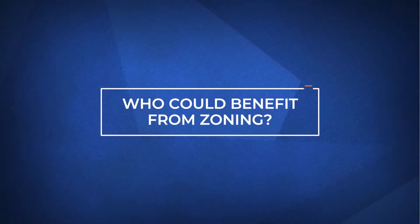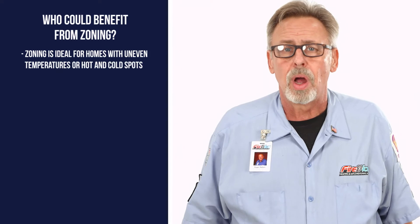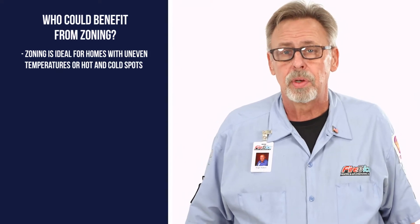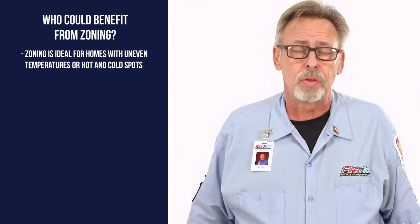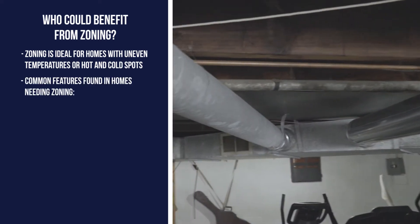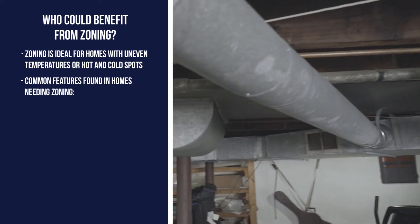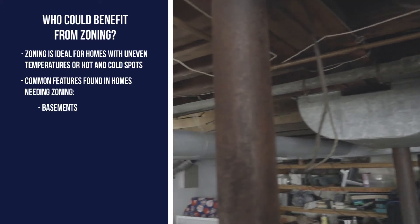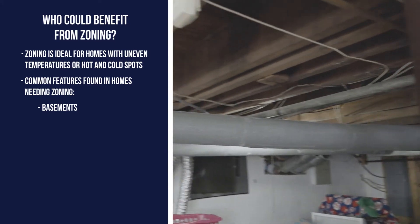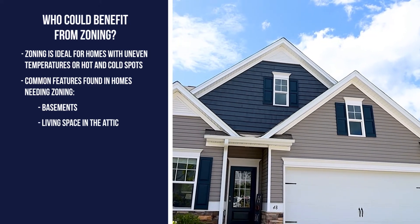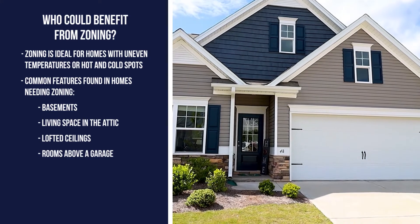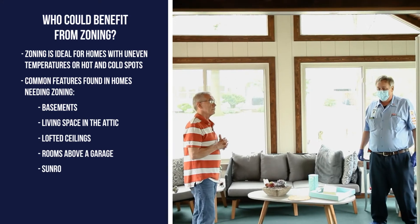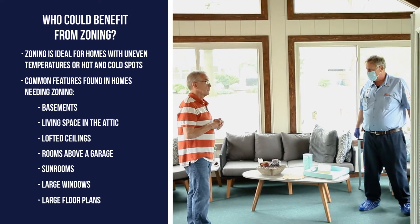Have you ever walked around your house and noticed a drop in temperature, or is your upstairs several degrees warmer than downstairs? Your home probably isn't zoned properly. Common features found in homes in need of zoning include finished or unfinished basements, living space in the attic, lofted ceilings, rooms above a garage, sunrooms, large windows, or large floor plans.